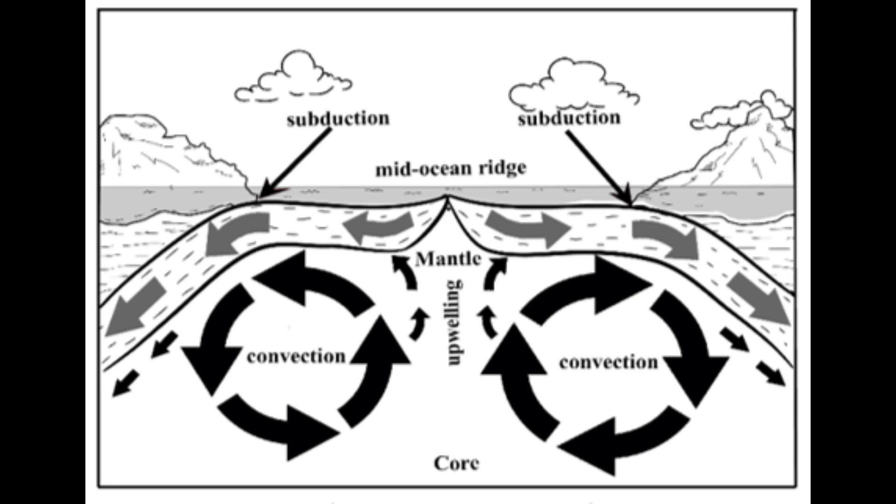In mantle convection, the heat source is the core. The core of the Earth is very hot. It is nearly as hot as the surface of the Sun, about 6000 degrees Celsius.